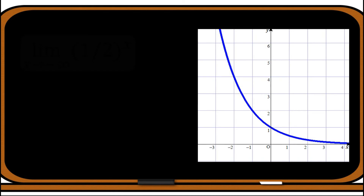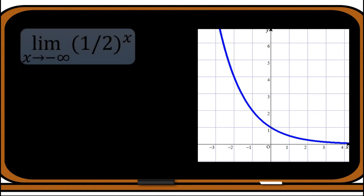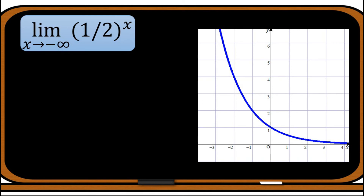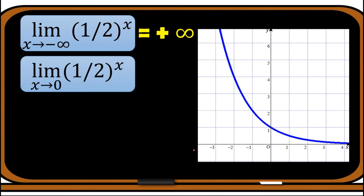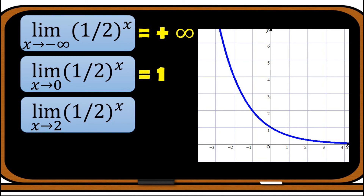Using the same function, the limit of (1/2)^x as x approaches negative infinity: looking at the graph, as we go to the left toward negative infinity, the graph goes up continuously, so the answer is positive infinity. The limit of (1/2)^x as x approaches zero: approaching from the left it goes to 1 and from the right it approaches 1 as well, so the answer is 1. The limit of (1/2)^x as x approaches 2: from both sides the value is 1/4.